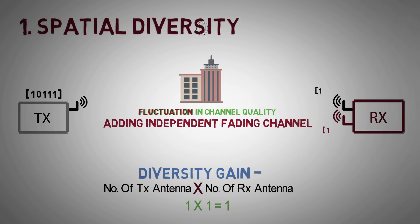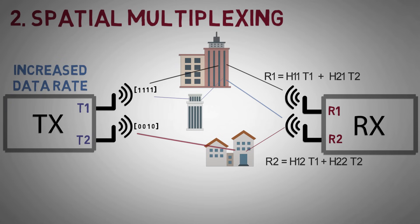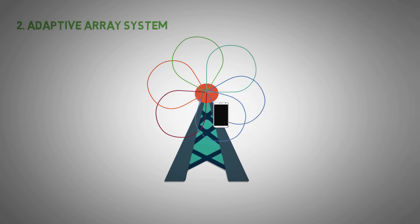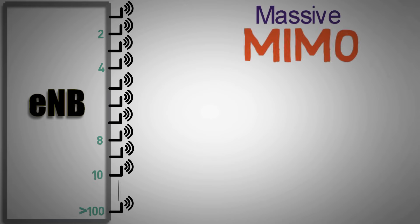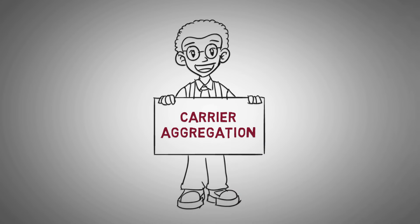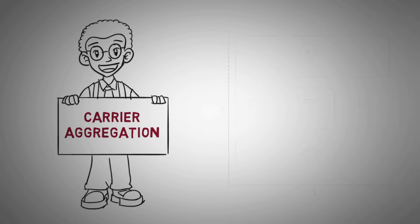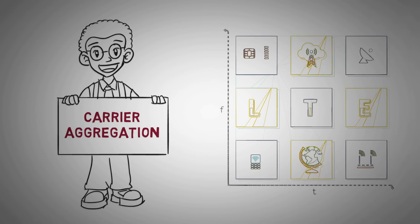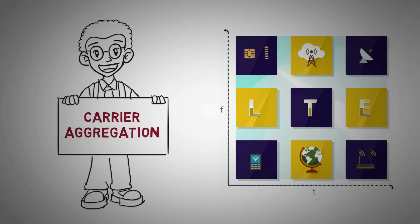In this brief video on MIMO, we have seen how multiple paths increase link robustness via spatial diversity and link capacity via spatial multiplexing. We have also seen how, in the future, coverage can be improved using antenna beamforming, and throughput can be enhanced using massive MIMO. In our next video on carrier aggregation technique, we will discuss how throughput is enhanced by combining multiple bands. You can post your doubts in the comments section. Don't forget to share it with your friends. Happy Learning. Thank you.